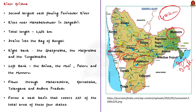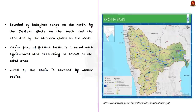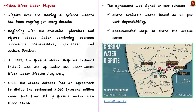Its right bank tributaries include the Ghataprabha, Malaprabha and Tungabhadra, and the left bank tributaries include the Bhima, Musi, Palleru and Munneru. The river flows through four states: Maharashtra, Karnataka, Telangana and Andhra Pradesh. Together with its tributaries, it forms a vast basin covering 33% of the total area of these four states. Krishna is bounded by the Balaghat range on the north, by the Eastern Ghats on the south and east, and by the Western Ghats on the west. The major part of the Krishna basin is covered with agricultural land, accounting for 75.86% of the total area, and 4.07% of the basin is covered by water bodies.